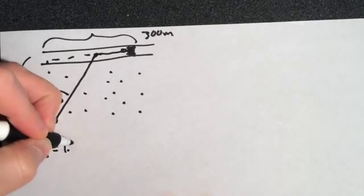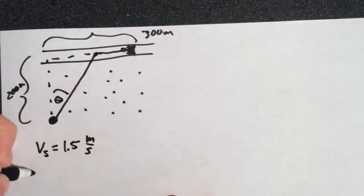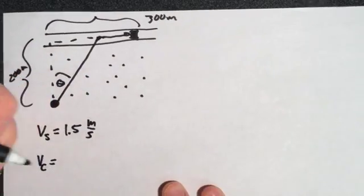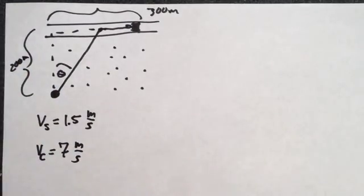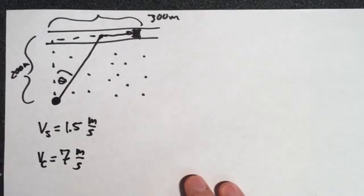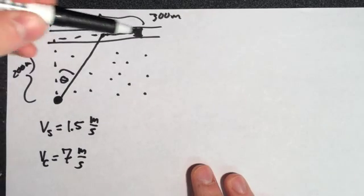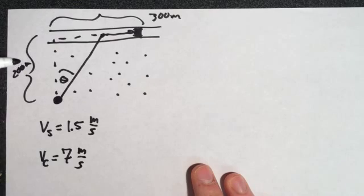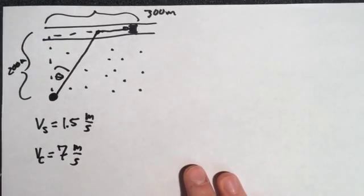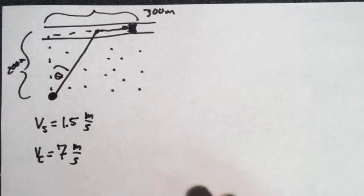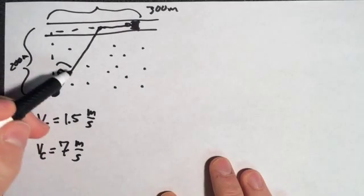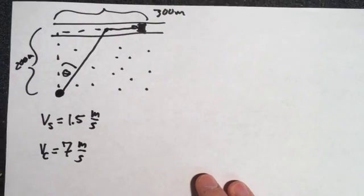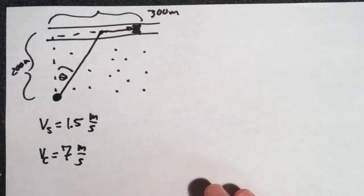So V sand was 1.5 meters per second and V concrete was 7 meters per second. So the question is what angle do you take? And yesterday we sort of left off with you can't just pick angles and do the math every time. That's called guess and check, but in calculus now you have an infinite number of angles to choose from and you can't do an infinite number of calculations. So we have to solve this analytically with algebra.